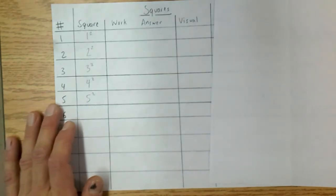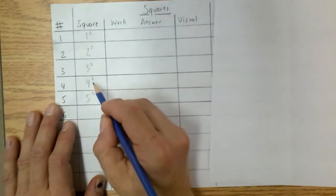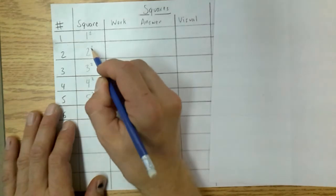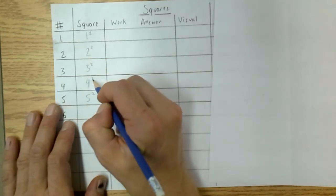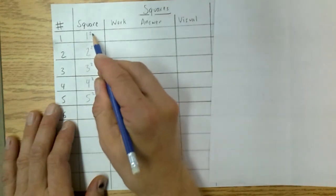Notice I'm calling it to the power of because that's also an exponent. Right now we'll just say that any time you see a 2 up here in the corner, upper right-hand corner of a number, that means that we've squared it.